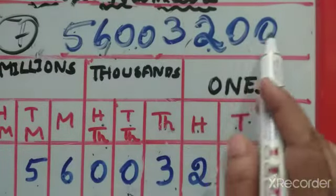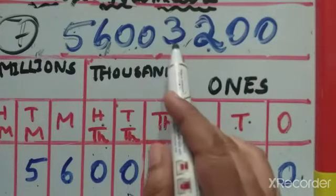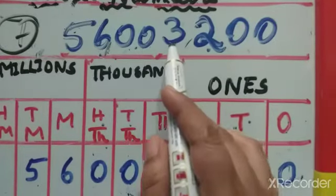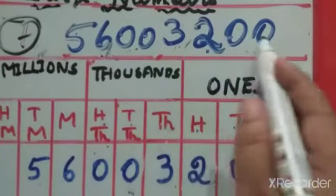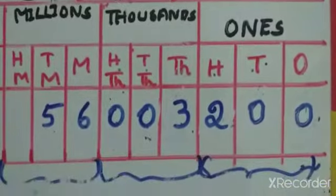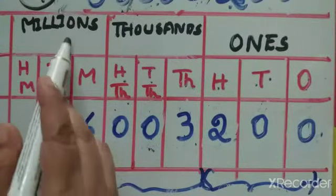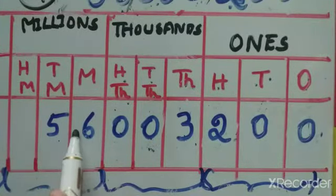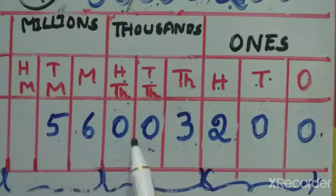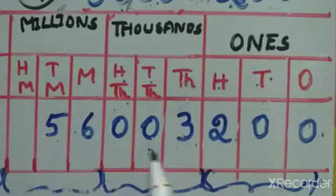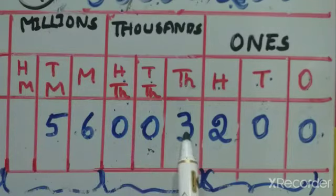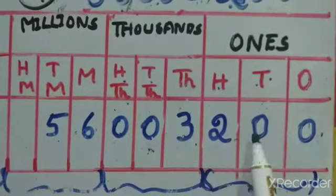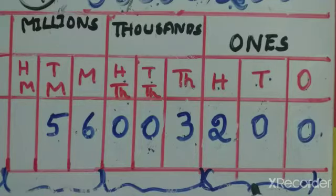So the number reads: 56 million, 3,200. Looking at the chart: 56 is in the millions group, 003 is in the thousands group, and 200 is in the ones group. So we read it as 56 million, 3,200.